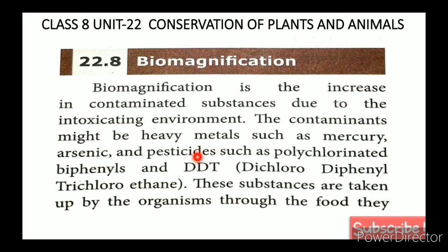The counting increases from lower level to higher level — that is magnification. The producer is the first step; the producer is the plant. Then there is the primary consumer, followed by the secondary consumer.